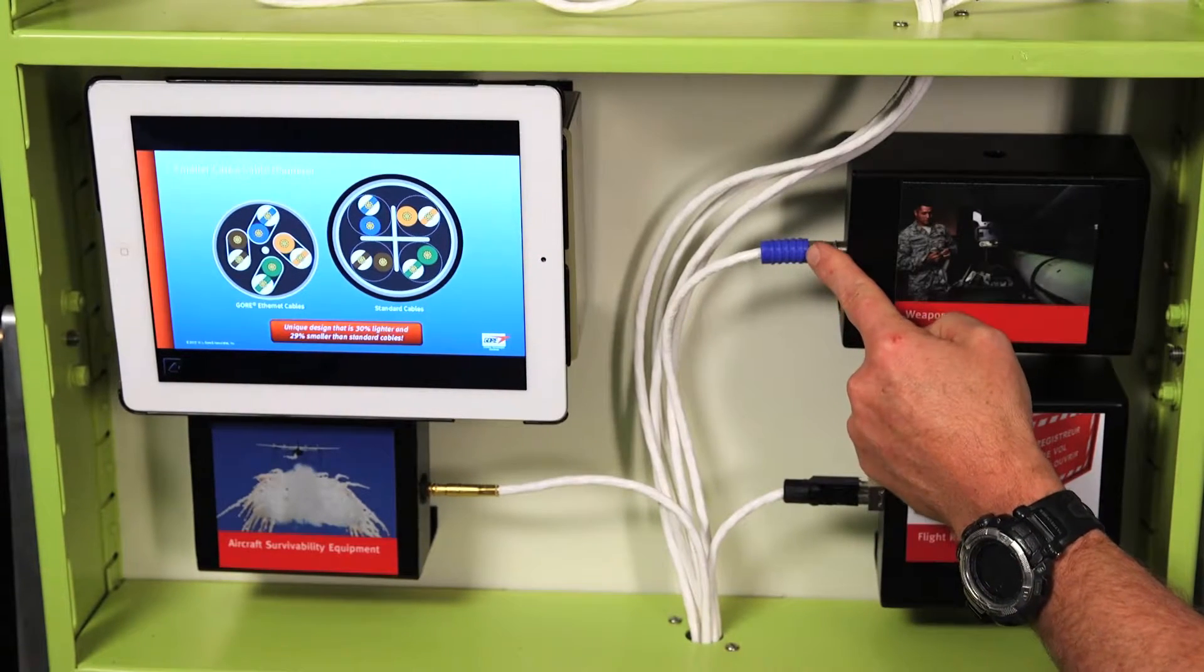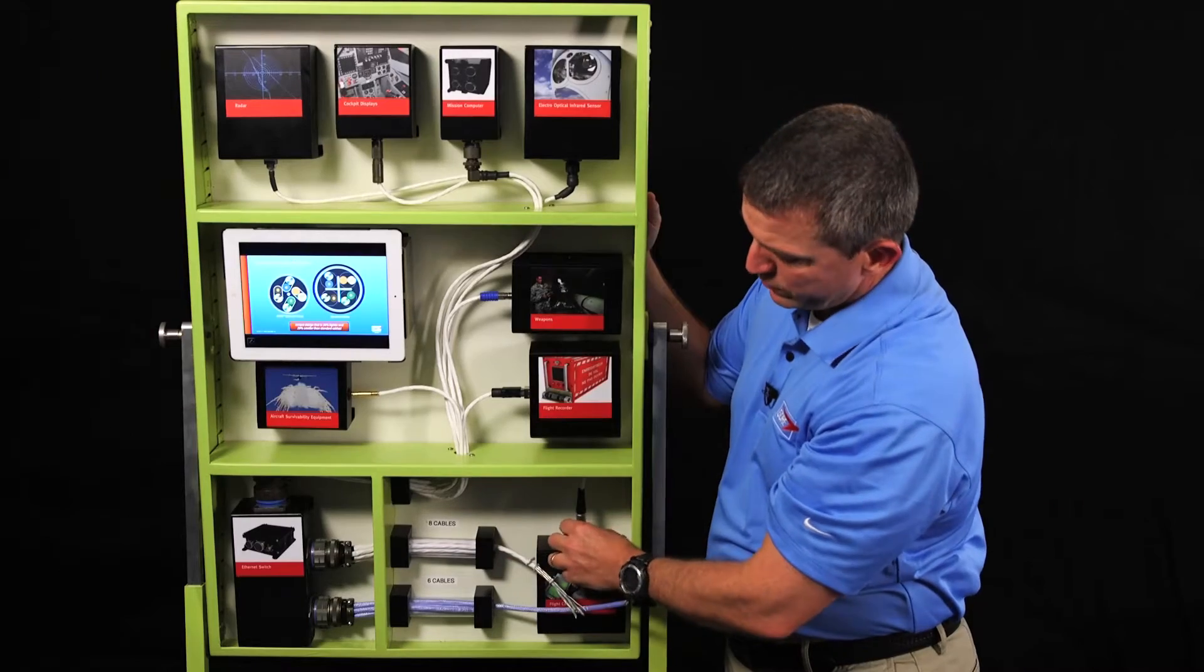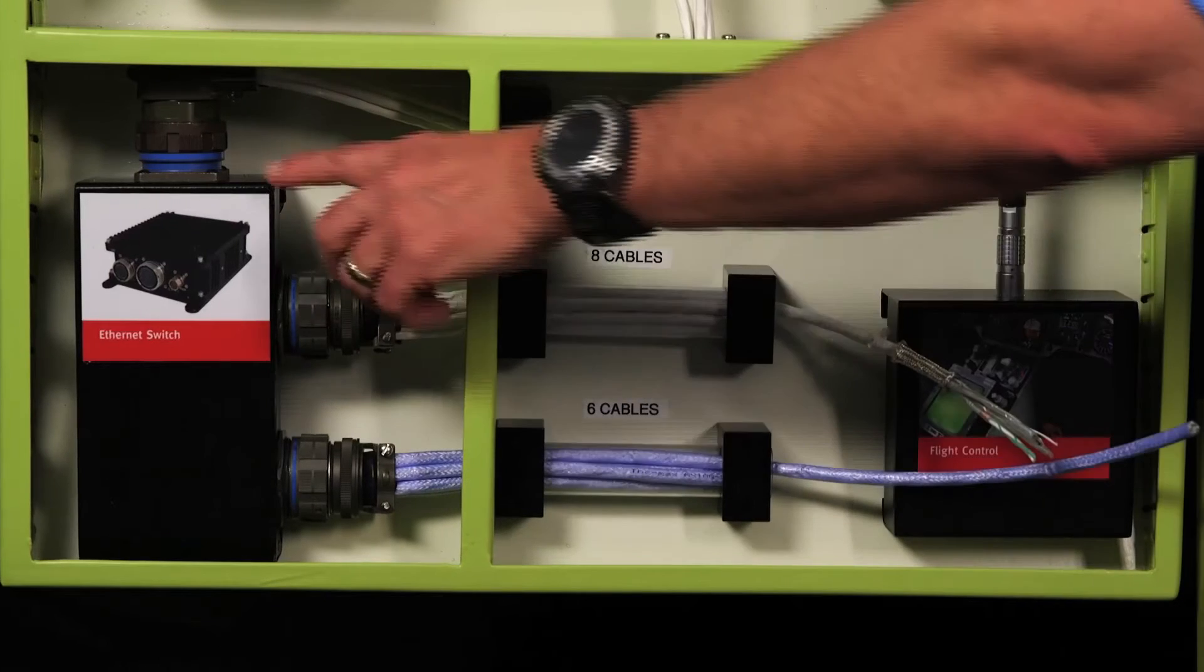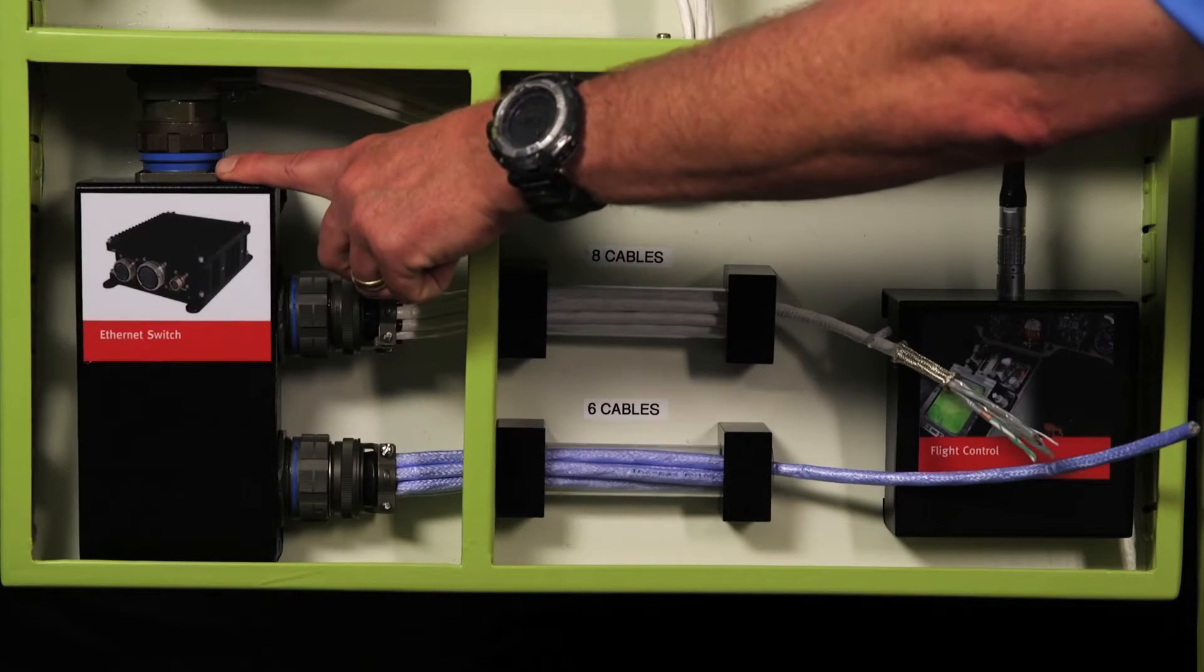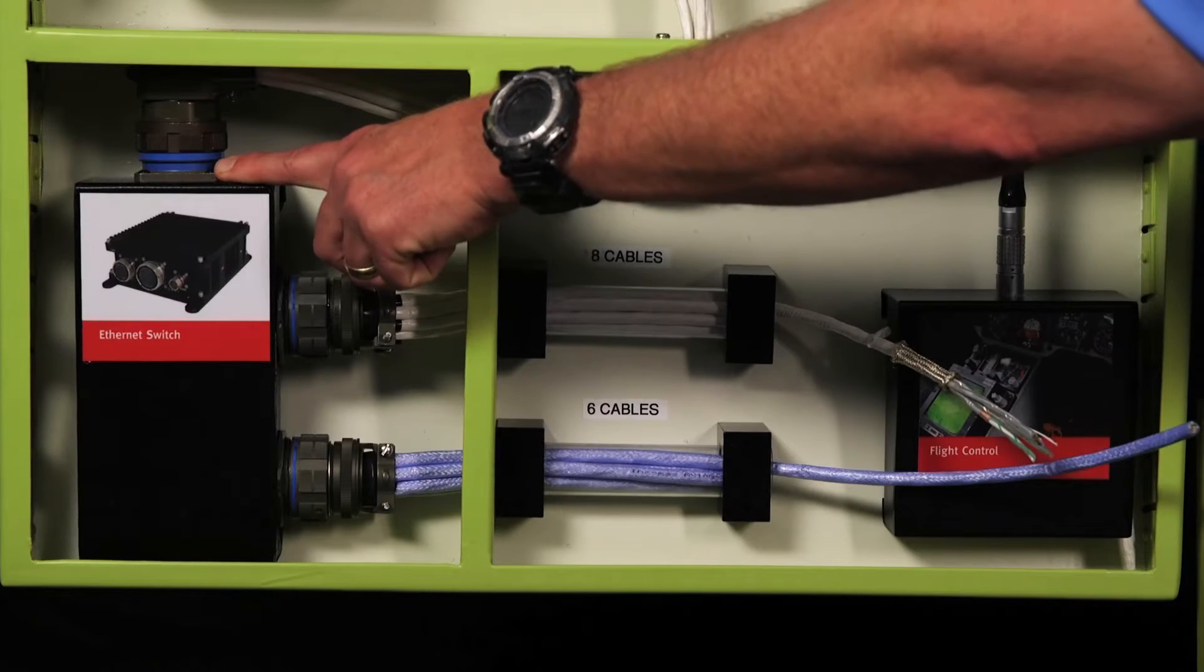Here we have the Carlisle Octax connector. Here is the Harding 8P8C plug. And down here we have a Limo ethernet plug. And over here on our ethernet switch we have a Carlisle Octax M38999 shell size 25 connector with eight ethernet cables in it.